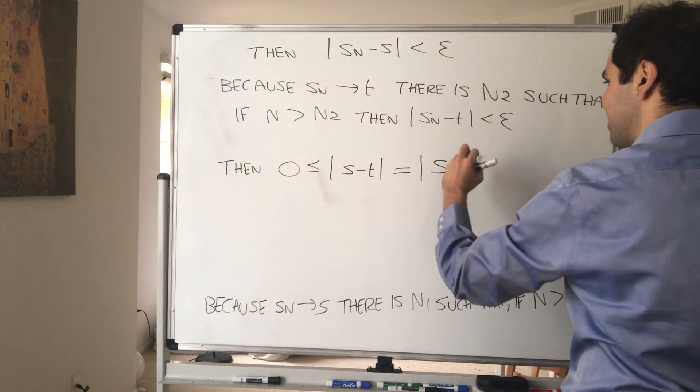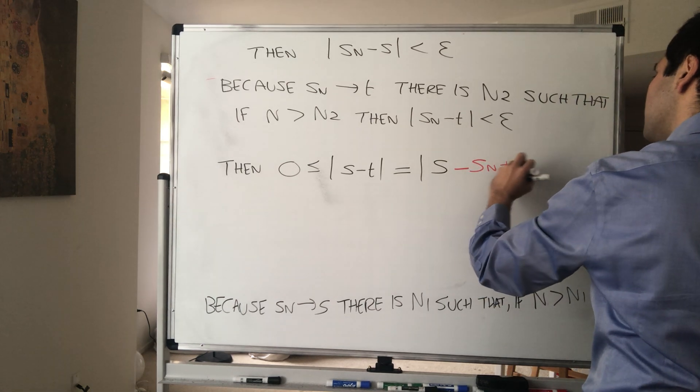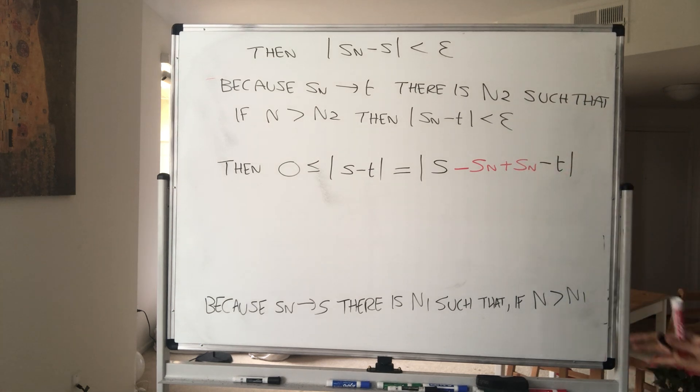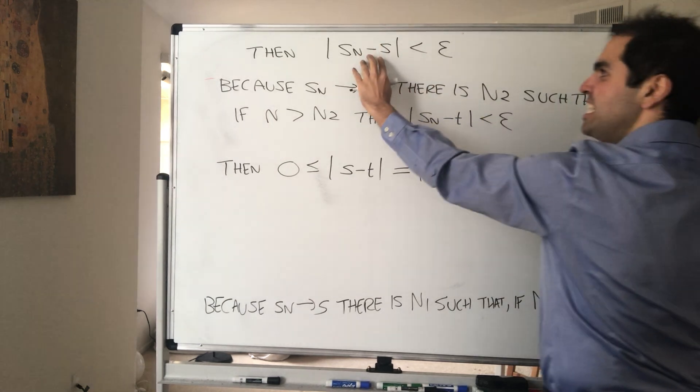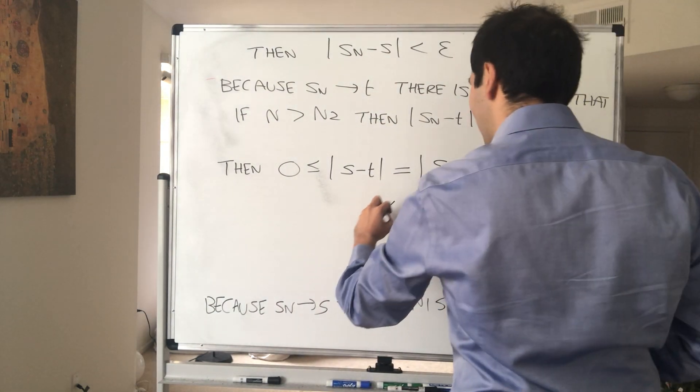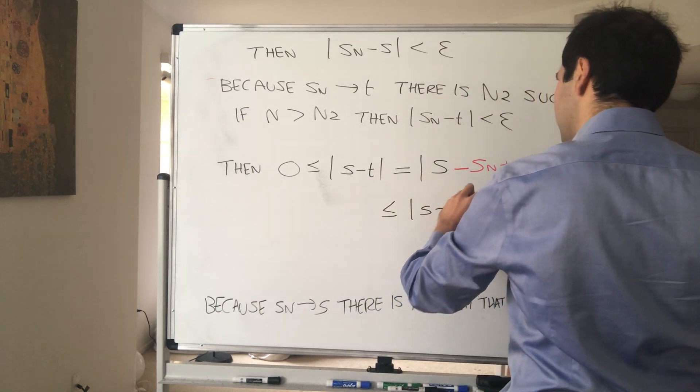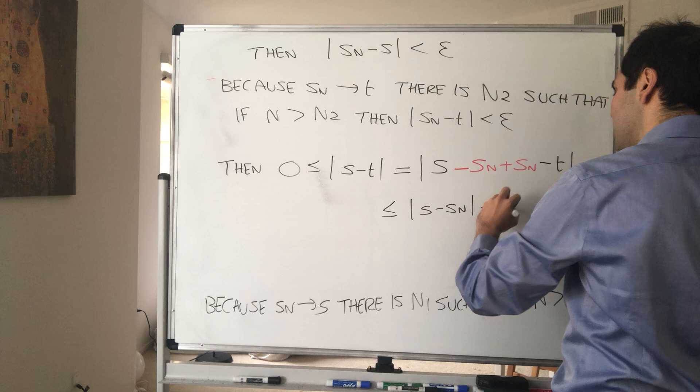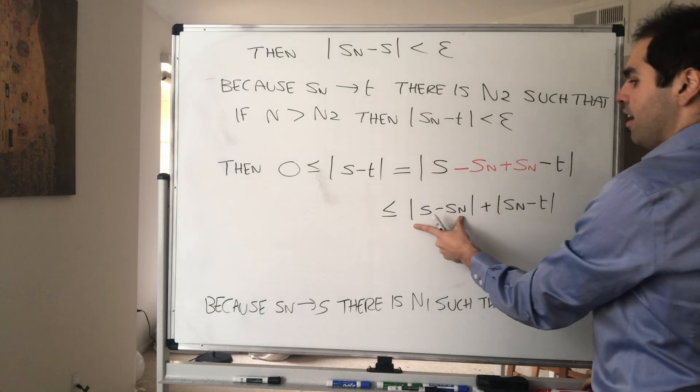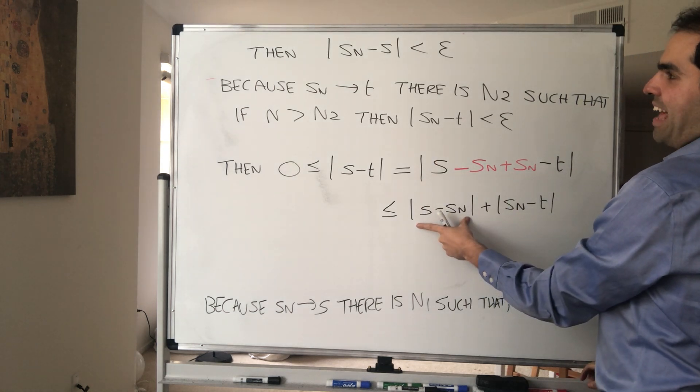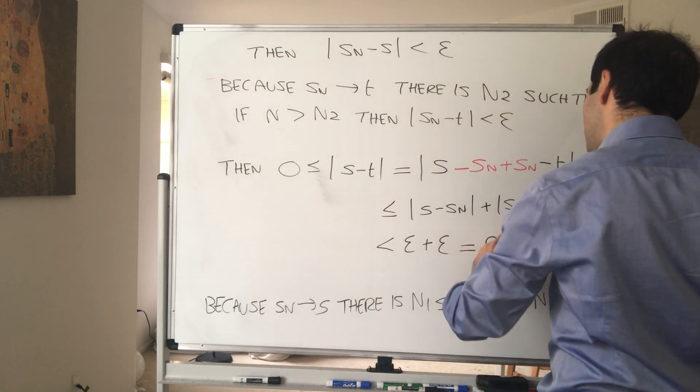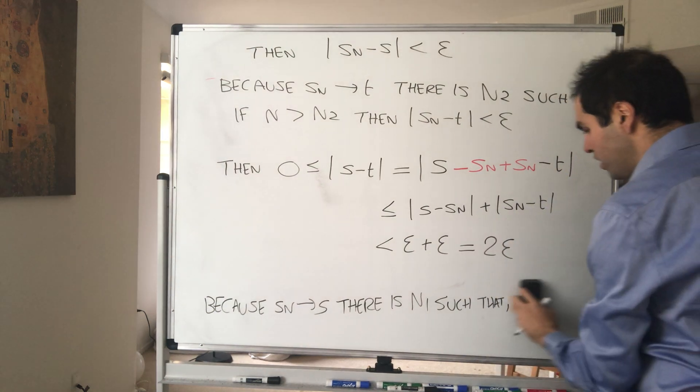plus Sn minus T. Why? Because we have Sn minus T here, and we have Sn minus S here. And then we want to use a triangle inequality. So that's absolute value of S minus Sn, plus absolute value of Sn minus T. And that's the same thing as Sn minus S. So this is really less than Epsilon plus Epsilon, which is 2 Epsilon. So what do we have?